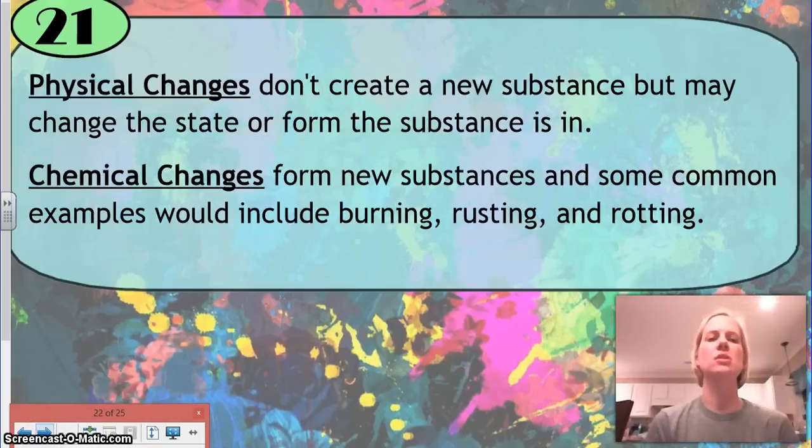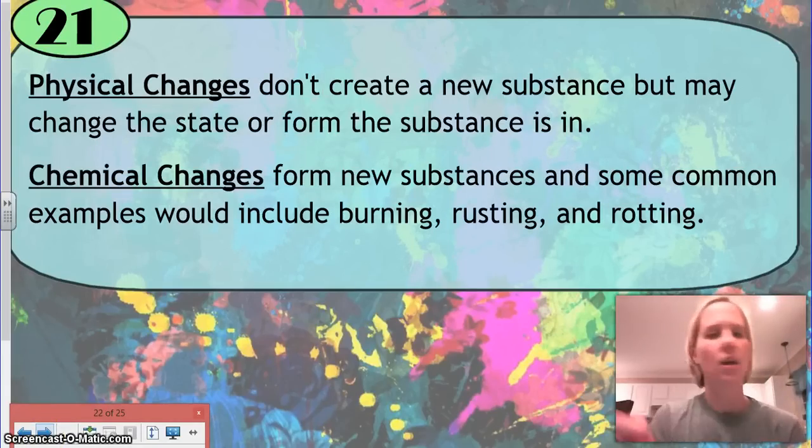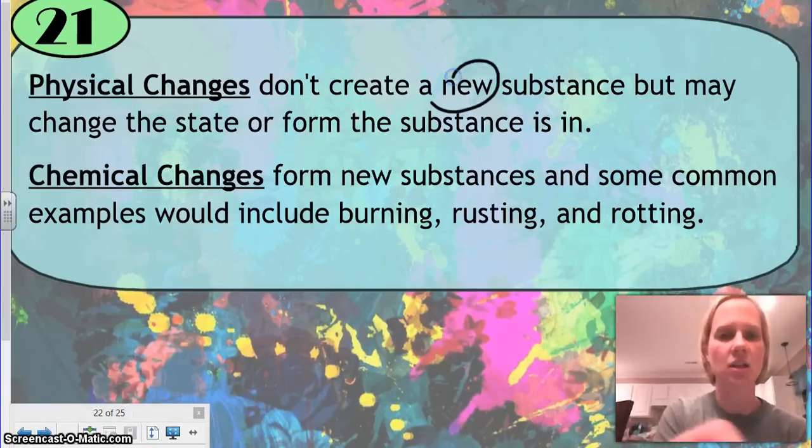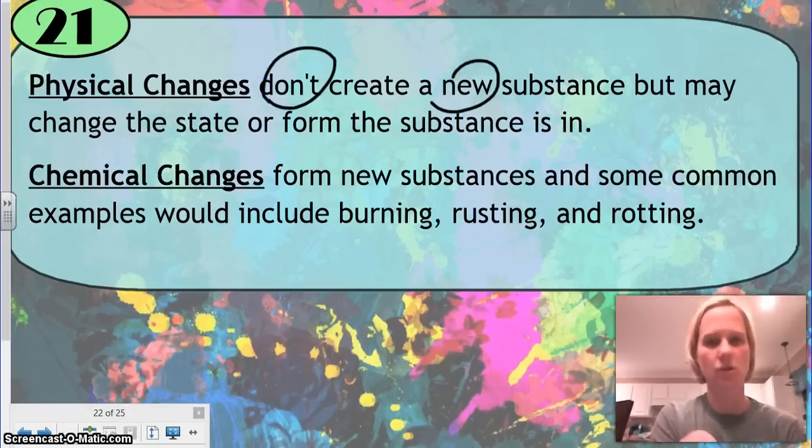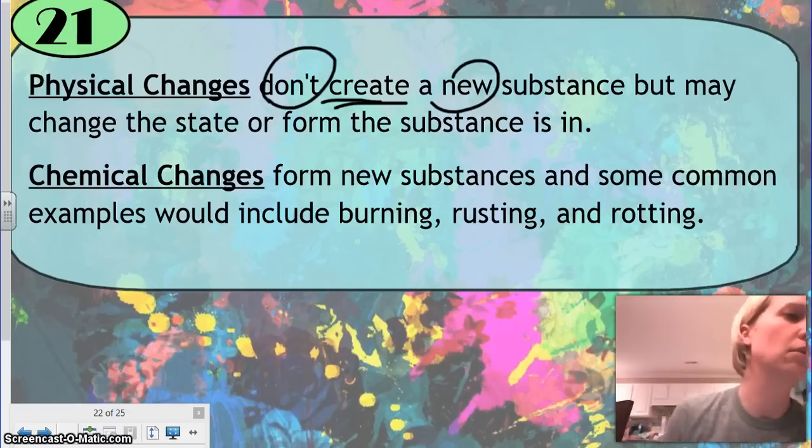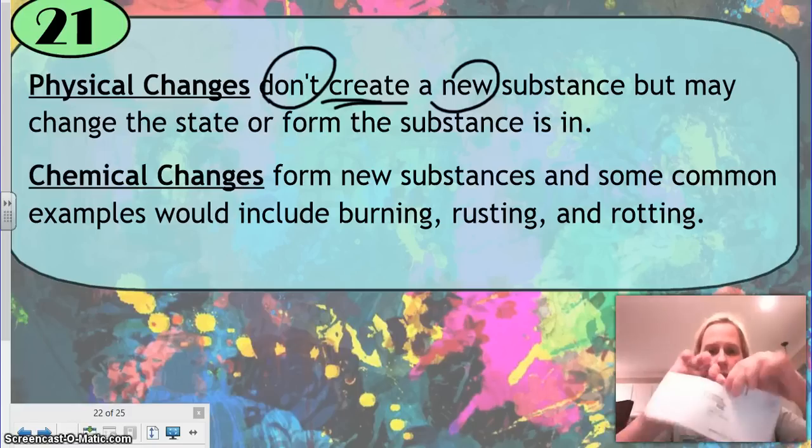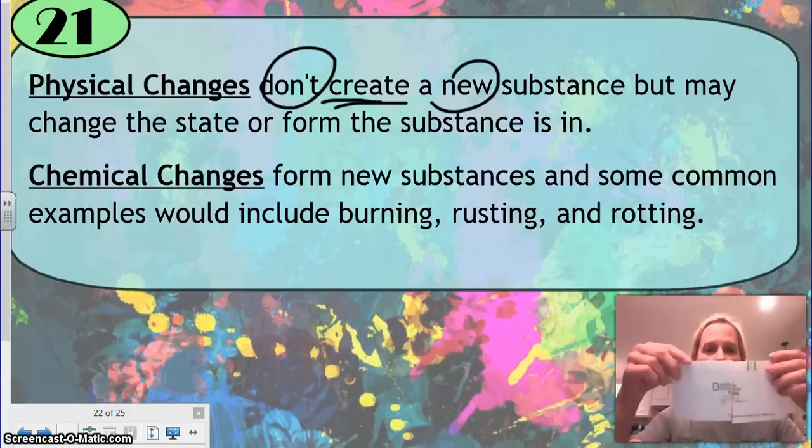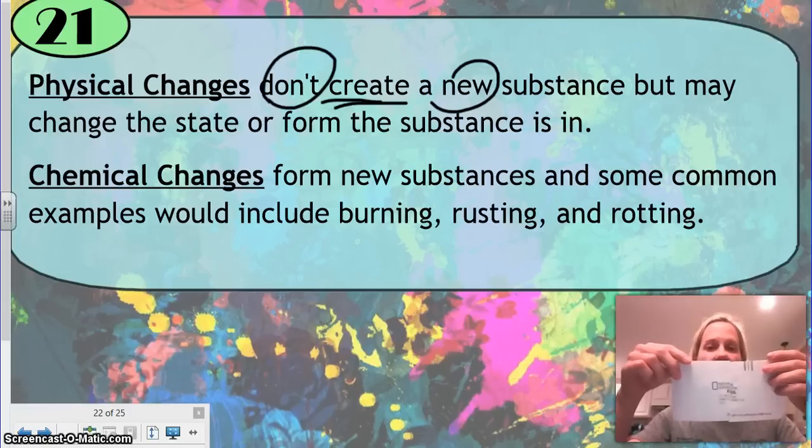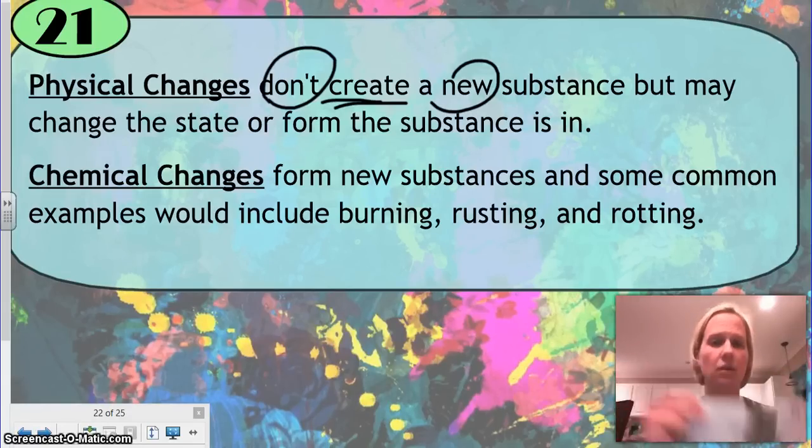Physical and chemical changes. Physical changes, remember, they do not create a new substance. They might change its state. If I have an envelope and I'm going to rip the envelope in half, it's still an envelope. So, I can tape this back together. All I've done is just separate, just ripped it apart. But it's still an envelope.